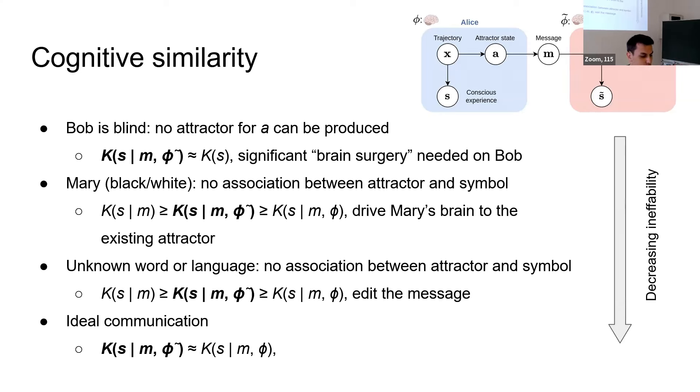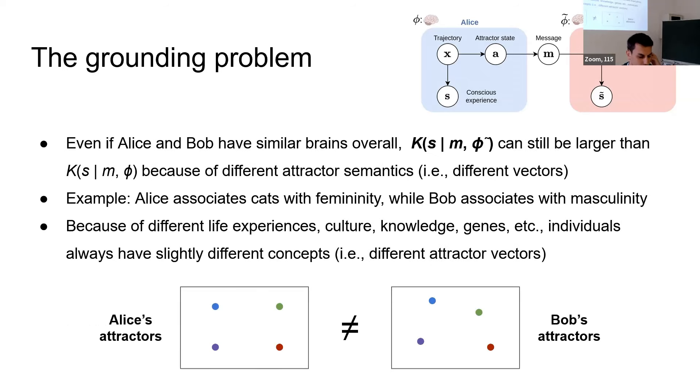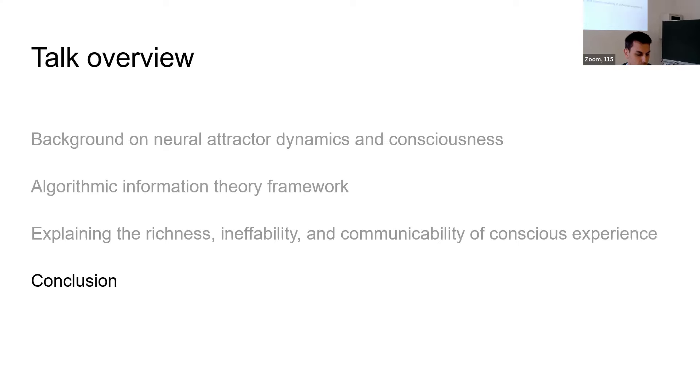A less extreme case than that, even if it's just an unknown word or language, then the problem is that there's no association between the attractor and the symbol that's being used. There's basically no ineffability over here. If somebody speaks German and I only speak English, well, then I just have to change the message. There's very few bits associated to that change. And then ideal communication is that their brains are very similar. The last thing that I would talk about is the grounding problem where people's brains are similar but not exactly the same. They're slightly different experiences, but maybe I don't need to go into that too much. It's just a less extreme case of ineffability.